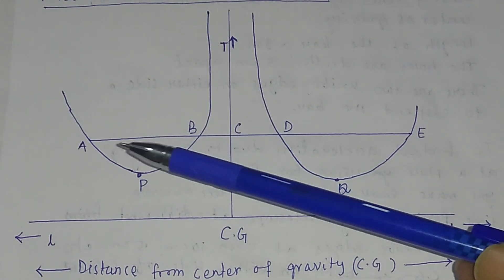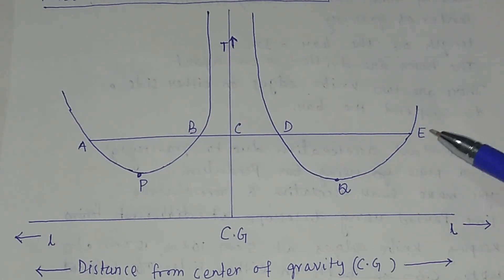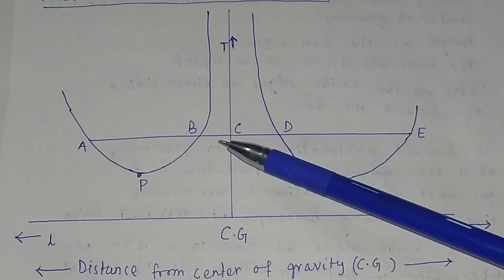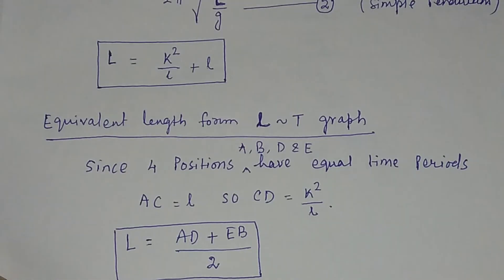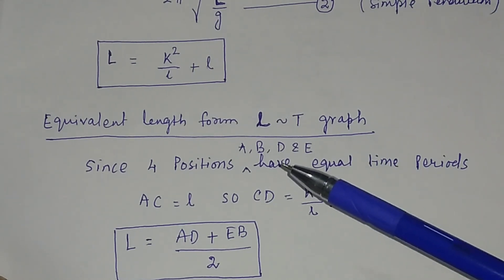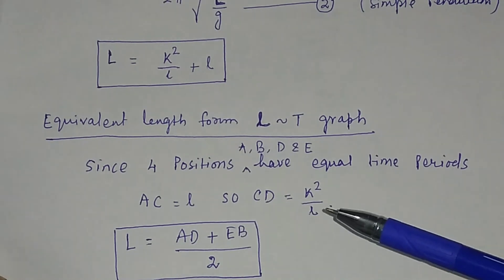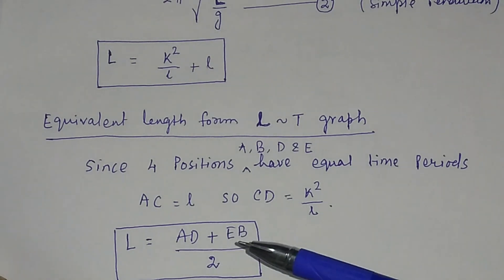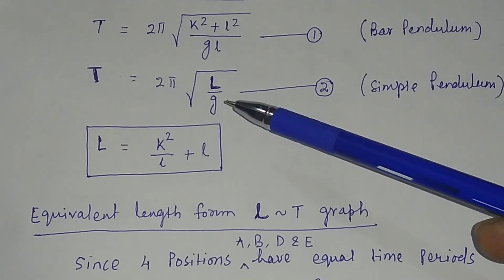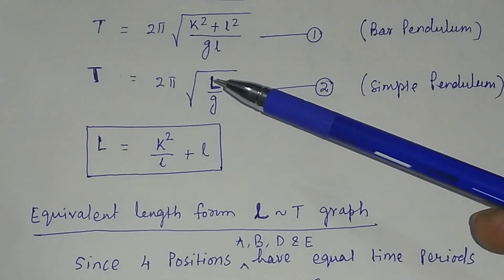The equivalent length can be calculated as follows: AC plus CD is one equivalent length, and EC plus BC is another. Taking the average of these two, you find the equivalent length L, which equals AD plus EB divided by 2. After finding the equivalent length from the L-T graph, you can find the value of acceleration due to gravity g, because g equals 4 pi squared times L divided by T squared. Plotting an L-T squared graph gives a straight line, and from its slope you can find L by T squared, and thus determine g.